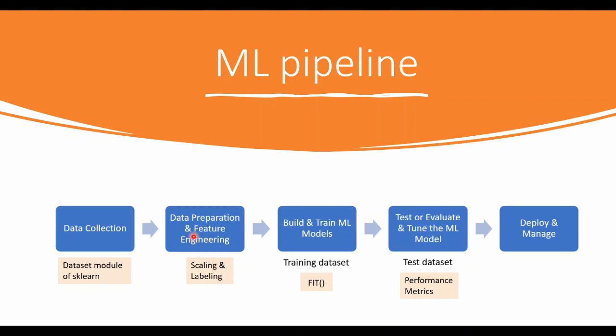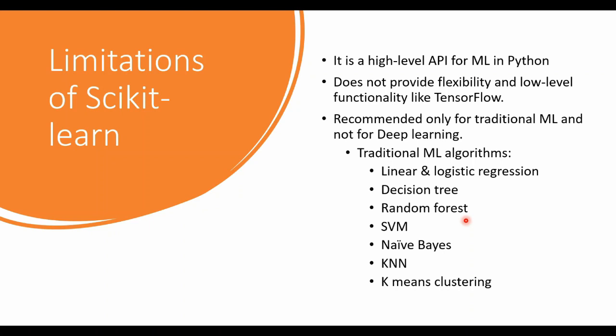We will discuss each of these stages separately in later videos, but this is the overall idea — sklearn has functionalities which will be helpful at various stages. Let us look at the limitations of sklearn. sklearn is a high-level API for machine learning, and unlike TensorFlow, it does not provide flexibility and low-level functionality. The advantage of high-level APIs is simple coding and accessibility to beginners. However, when working on deep learning and neural network-based architectures, TensorFlow or PyTorch are recommended — you can't use sklearn for those. sklearn is meant for traditional machine learning algorithms.